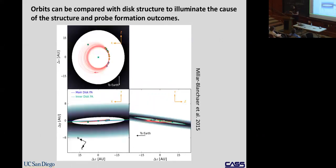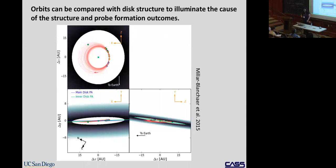Another example from beta Pic: directly imaged planets are usually found in young stellar systems where debris disks are still present. Those disks often have interesting structure, and people want to understand what generates it. Max and collaborators looked at how new orbital constraints could explain disk features like a warp in the beta Pic debris disk. That's why we care about orbits even for super long-period systems.